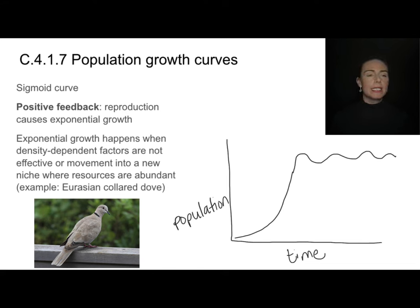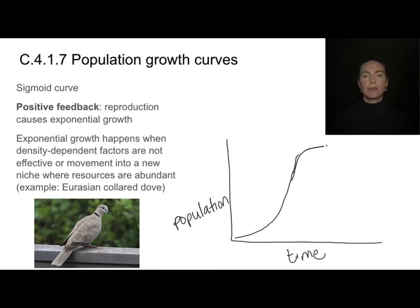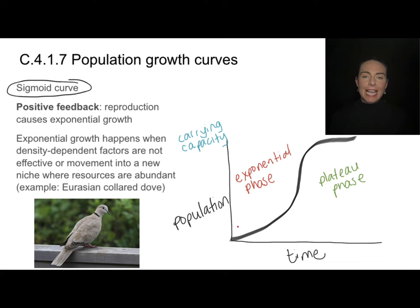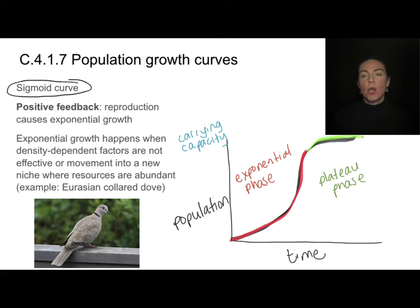Smoothing out all the fluctuations, we get a sigmoidal or S-shaped curve. This curve can be separated into two parts: the exponential phase driven by positive feedback, and then a plateau phase where density-dependent factors cause the population to hover right around the carrying capacity.